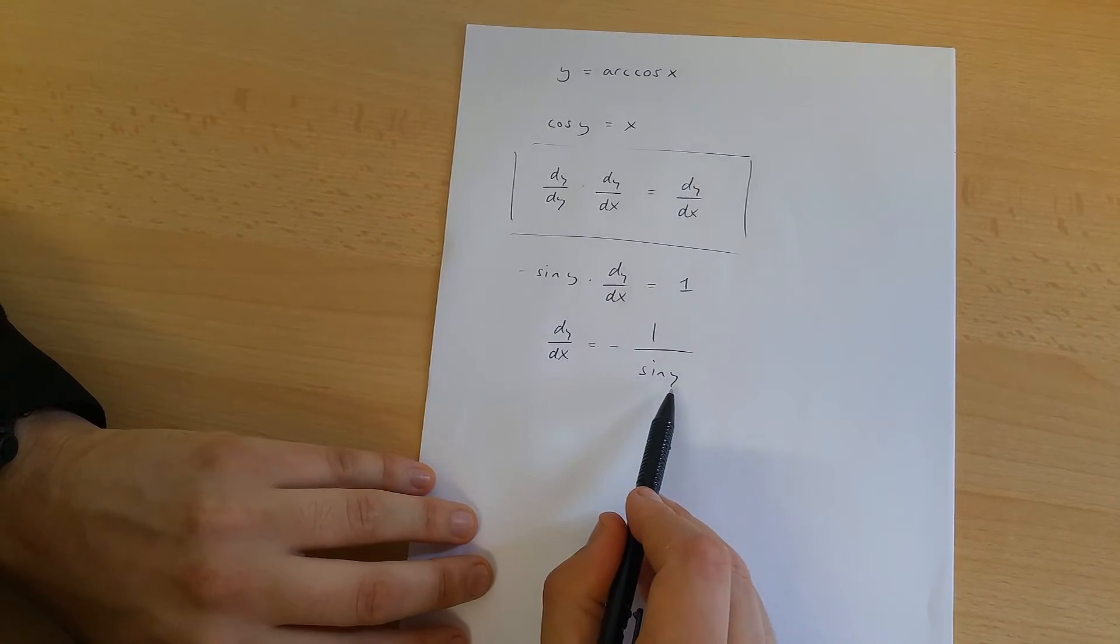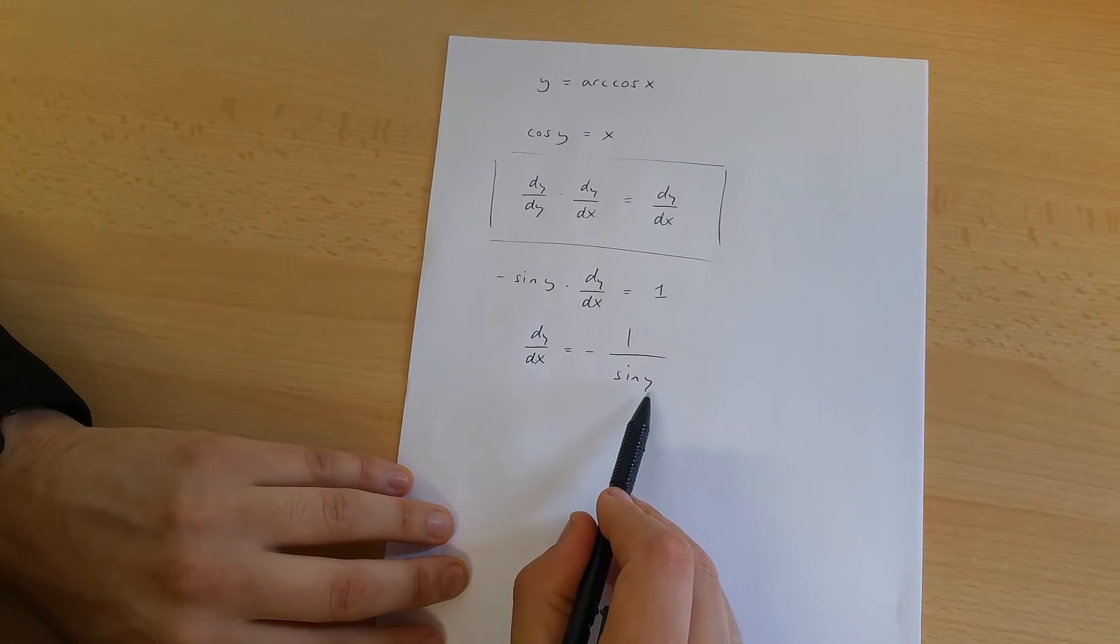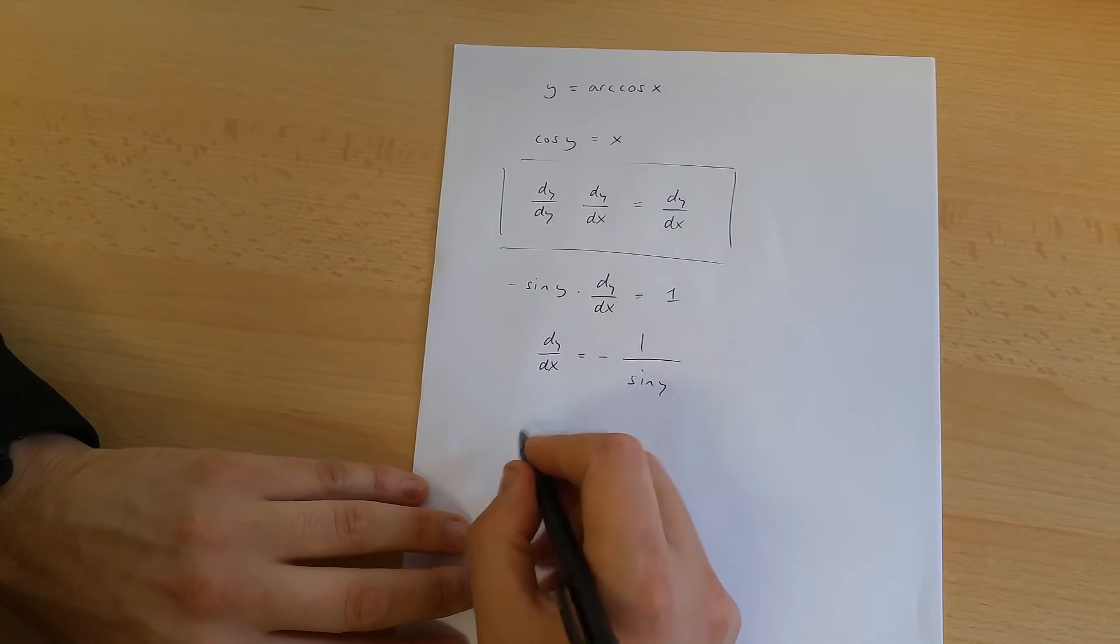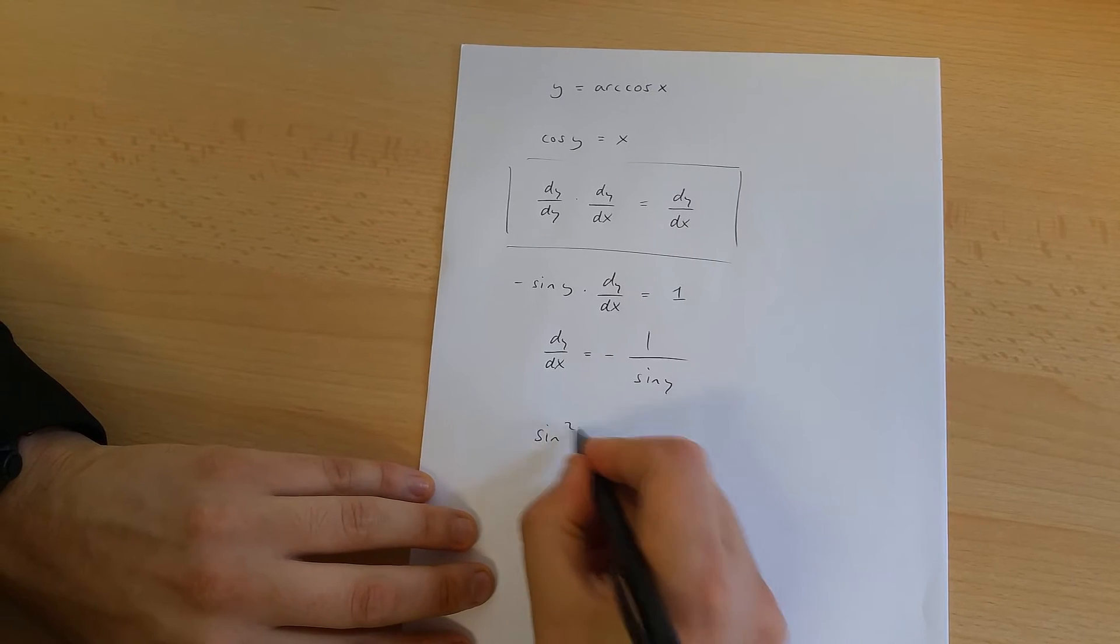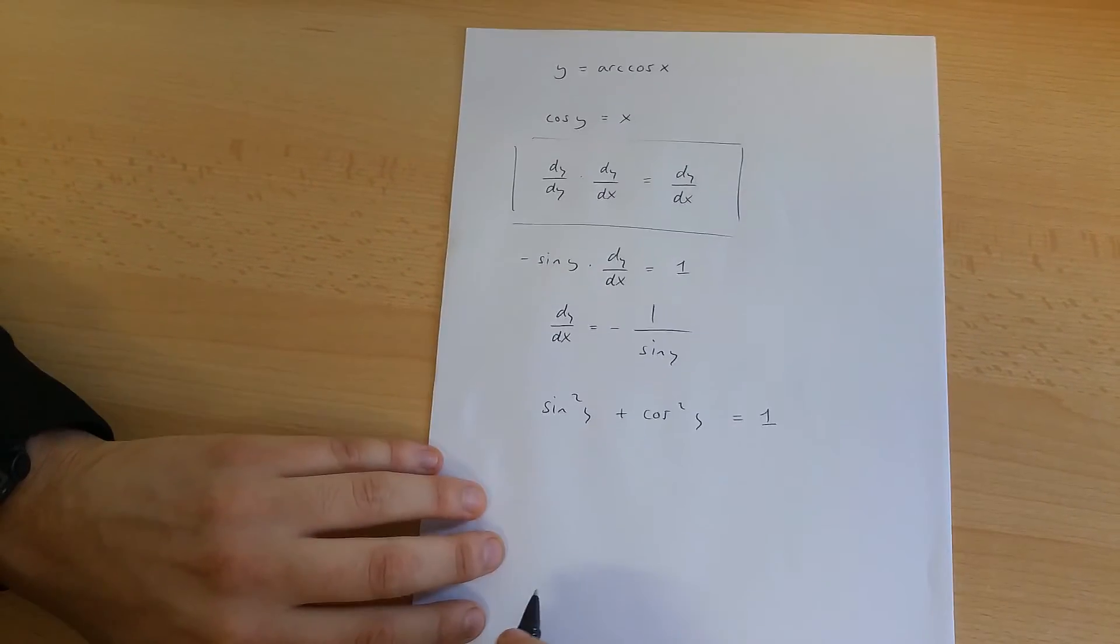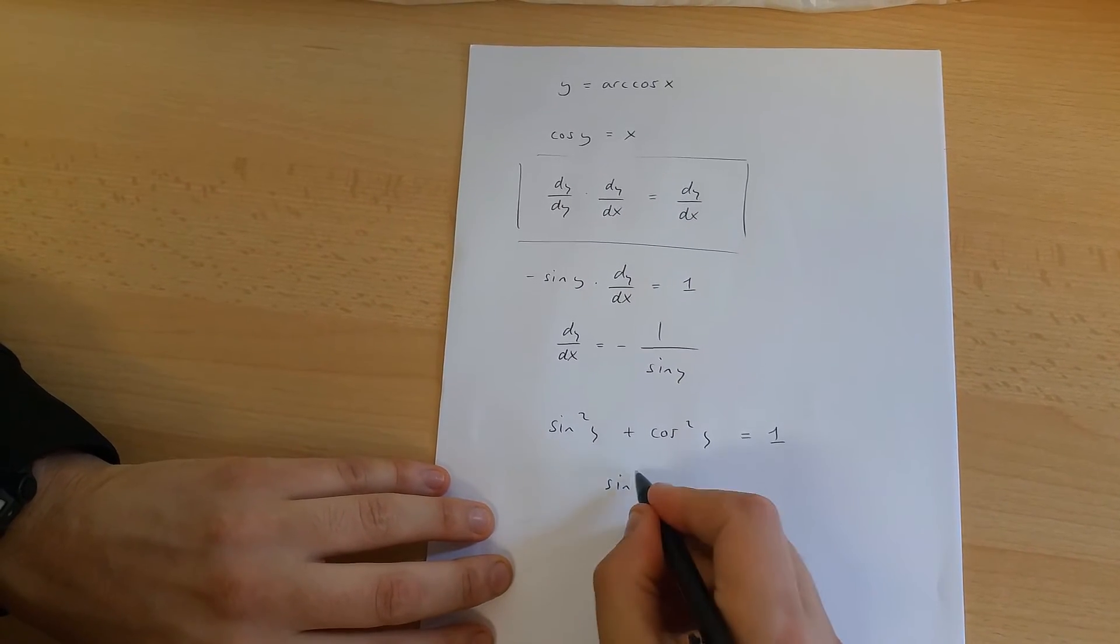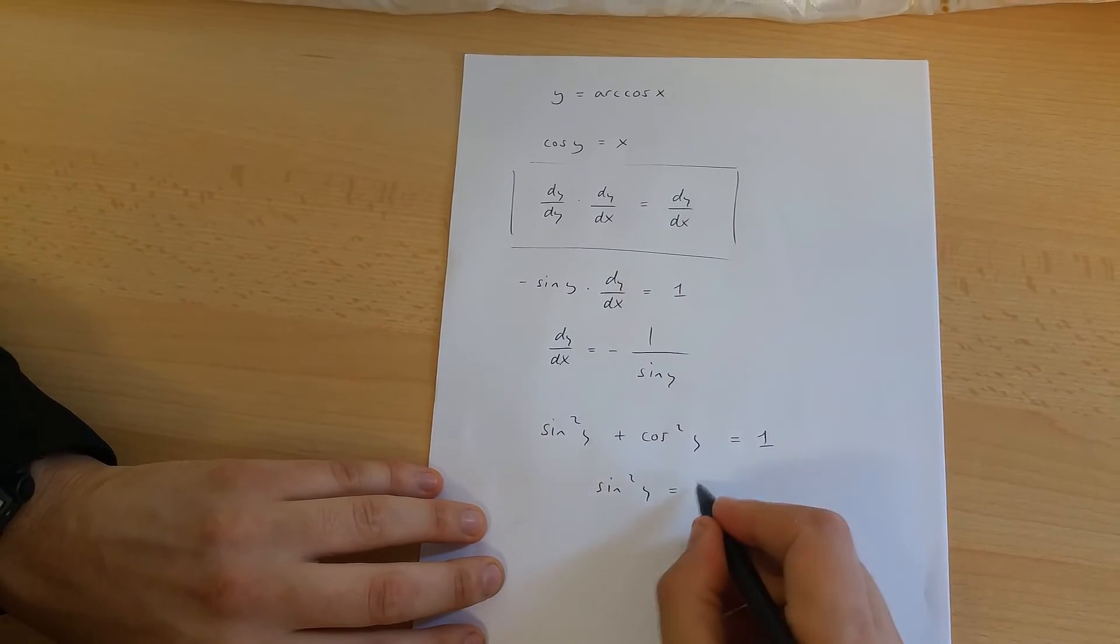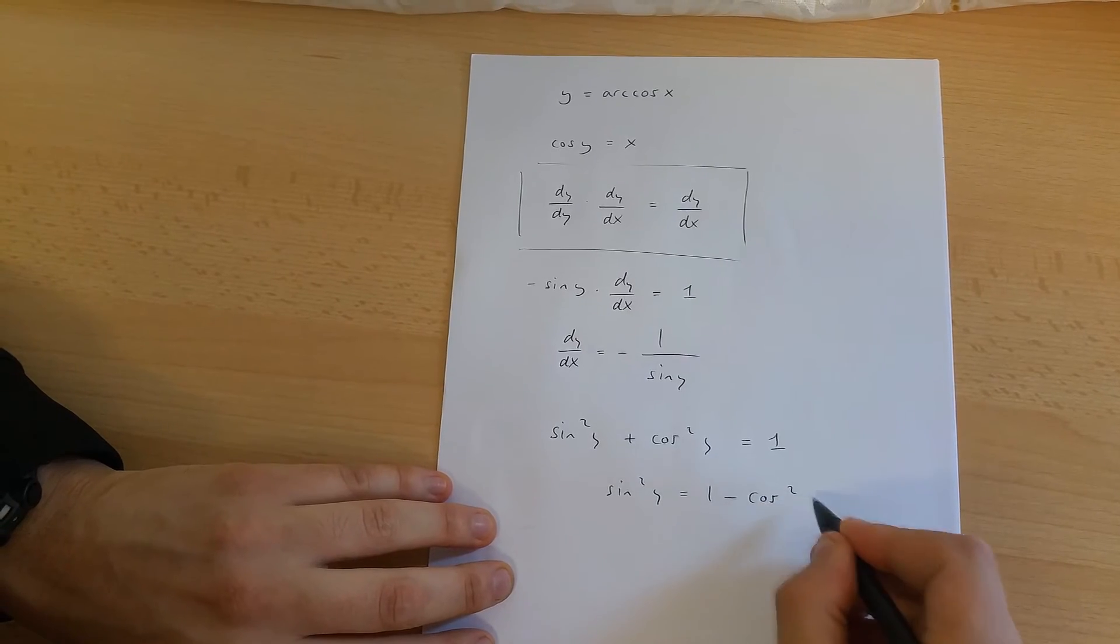Now, can sine y over here be expressed in terms of x? Let's see. We know that sine y squared plus cos y squared is equal to 1. This means that sine y squared is equal to 1 minus cos y squared.